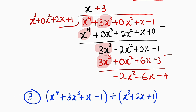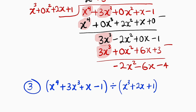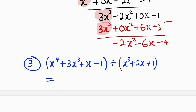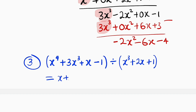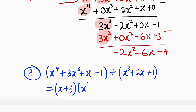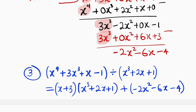So we conclude: x to the power of 4 plus 3x cubed plus x minus 1 divided by x cubed plus 2x plus 1 is equal to the quotient x plus 3, multiplied by the divisor x cubed plus 2x plus 1, then plus the remainder negative 2x squared minus 6x minus 4. And this is the result. If you like, you can try to factorize it, but we are not factoring here — we are just showing how to divide using long division.